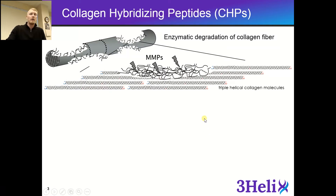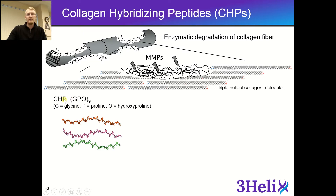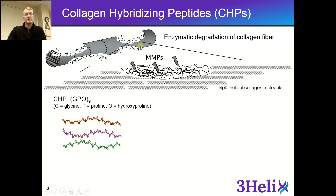Our collagen hybridizing peptide, or CHP, is based on a repeating sequence of glycine, proline, and hydroxyproline. This specific sequence has a very high propensity to refold into a collagen triple helix. Here we have a nice collagen fiber, and it gets degraded by a very specific family of enzymes known as matrix metalloproteinases, which can go in and cleave the triple helical molecule, exposing individual single-stranded collagen strands.